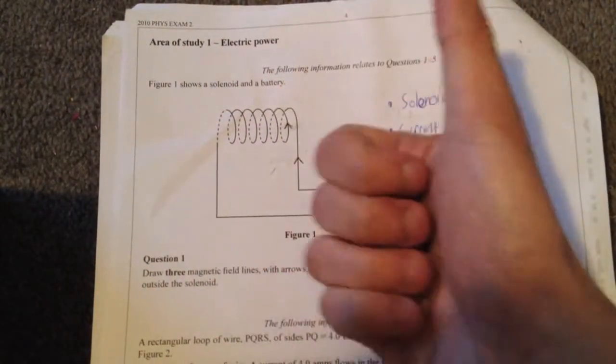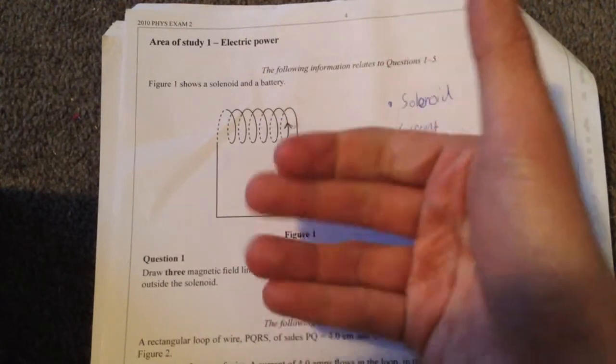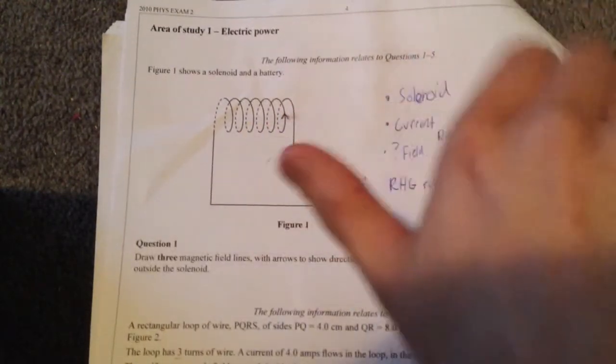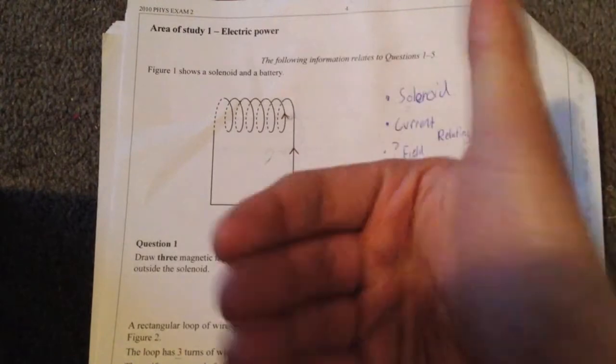The way we use it is put our thumb in the direction of the current and our fingers will go in the direction of the field. But our fingers can go in a full circle. But where do we want to put our fingers? Inside the coil.